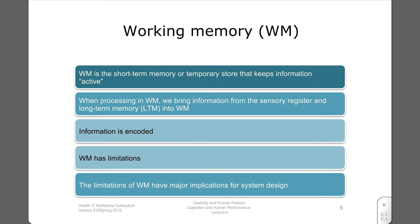Working memory is the short-term memory or temporary store that keeps information active. You can keep it active by simple rehearsal, like a phone number to a pizza parlor that you are about to call, or you can process the information more deeply. All information in working memory has an expiration date — it does not persist for very long. Once you've turned your attention to another matter, the prior contents of working memory quickly disappear.